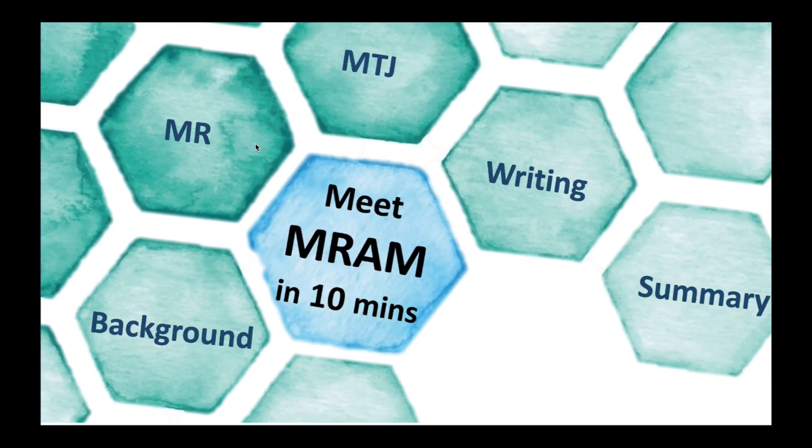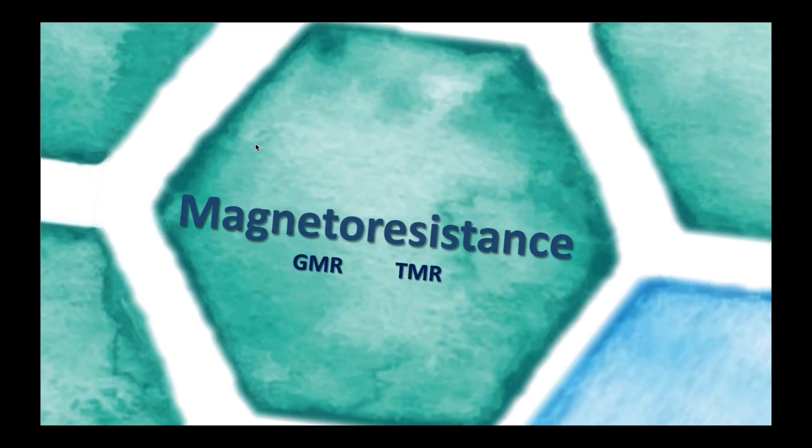Before we dive into MRAM, there is something important we should talk about. That is, magnetoresistance. Do you remember we have mentioned before that data are stored in 1 and 0? But how do we know it is 0 or 1? We can make use of the idea of higher and lower resistance. There are a lot of magnetoresistance that can produce higher and lower resistance. Here, we just mention two common kinds.